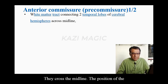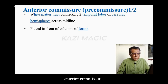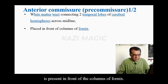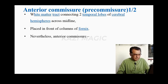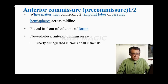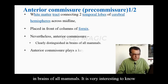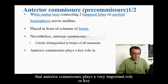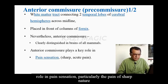They cross the midline. The position of the anterior commissure is present in front of the columns of fornix. The anterior commissure is clearly distinguished in the brains of all mammals. It is very interesting to know that the anterior commissure plays a very important role — a key role — in pain sensation, particularly sharp pain or acute pain.